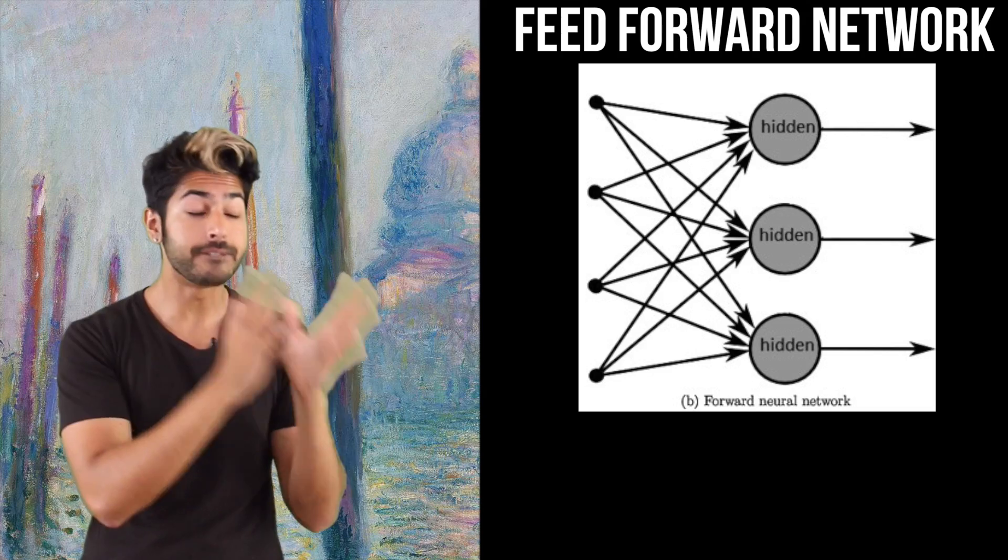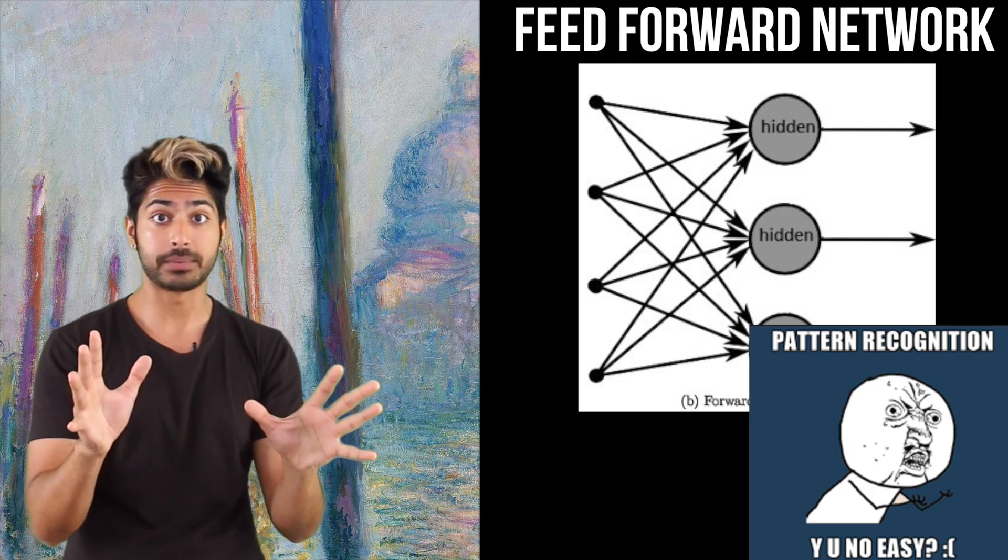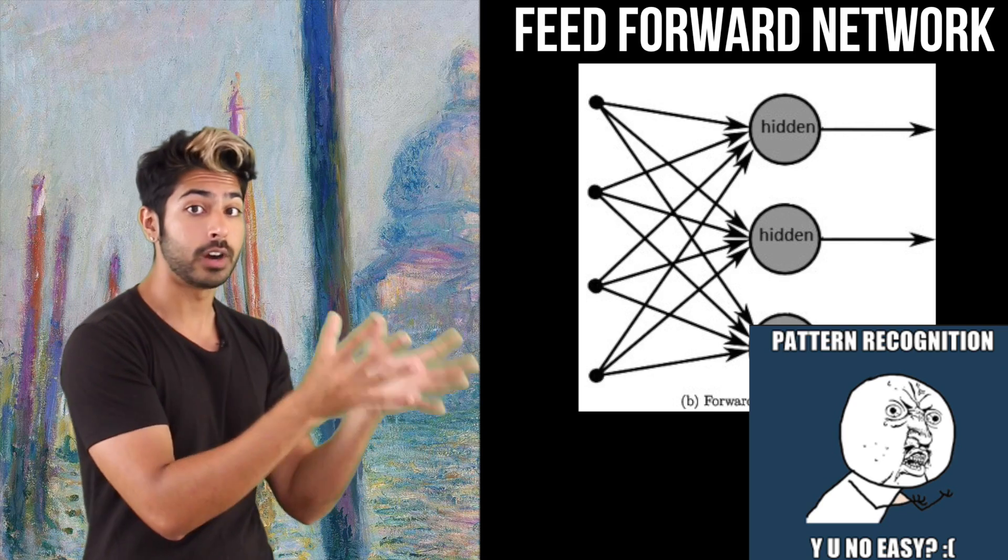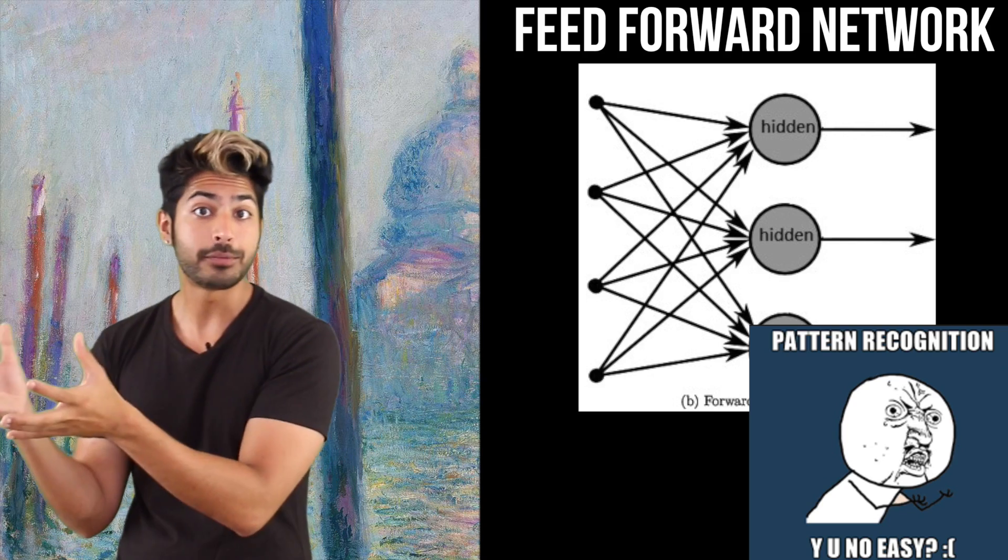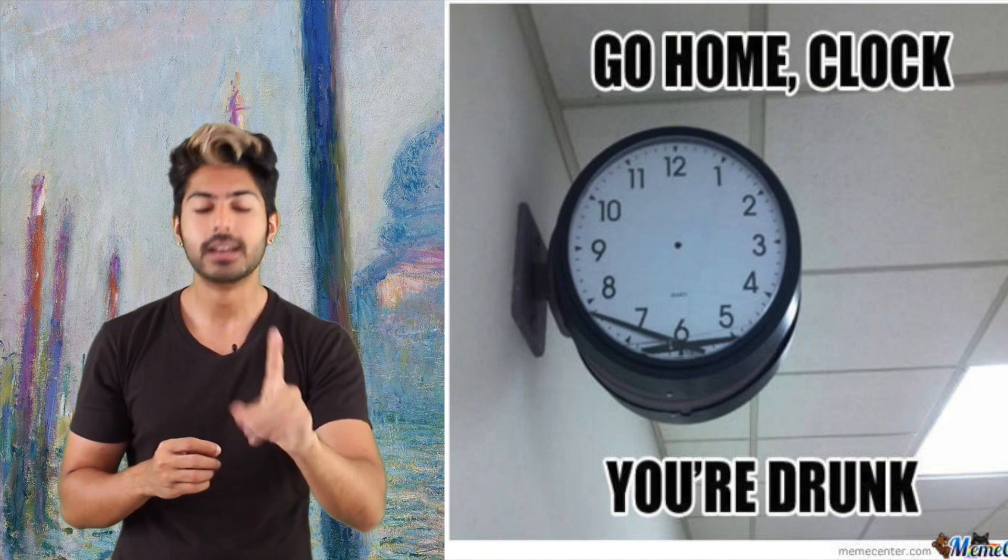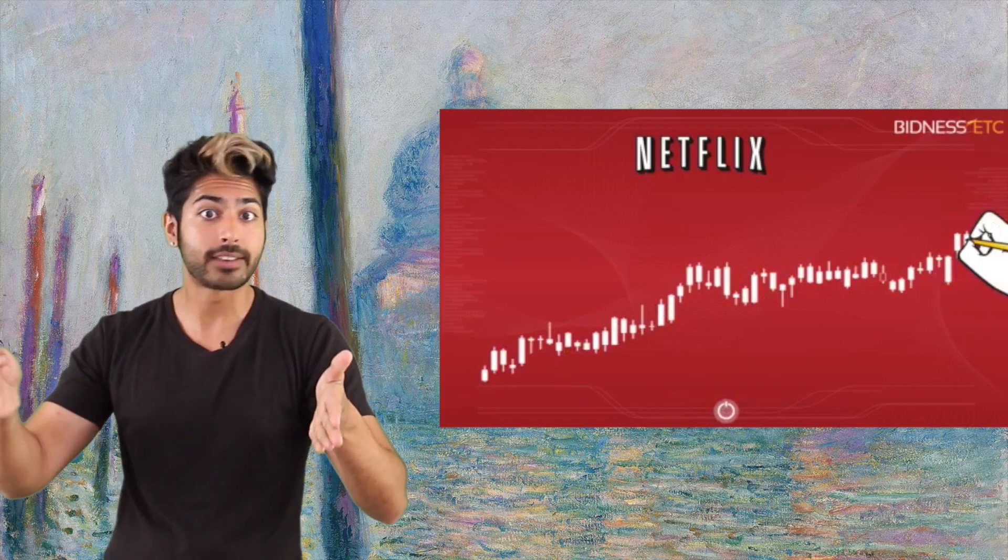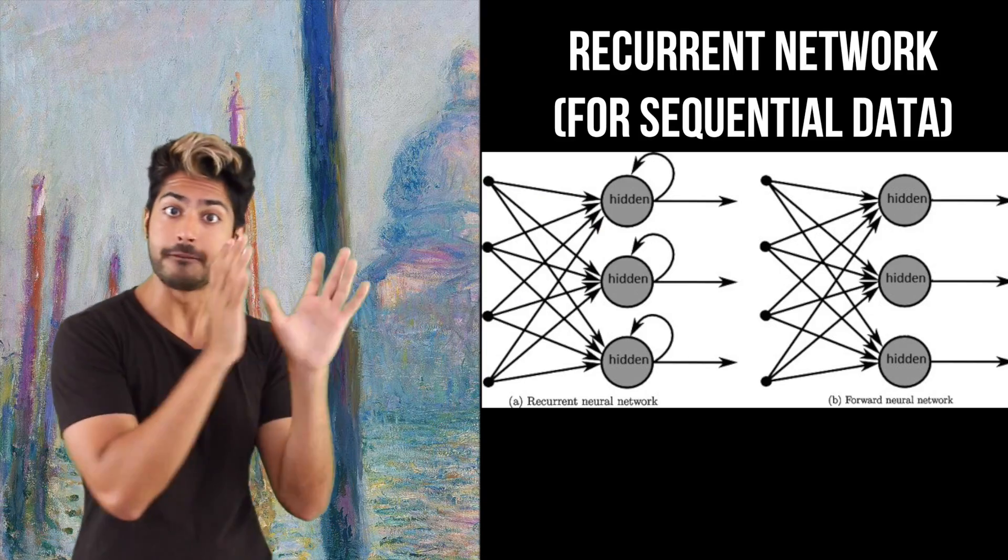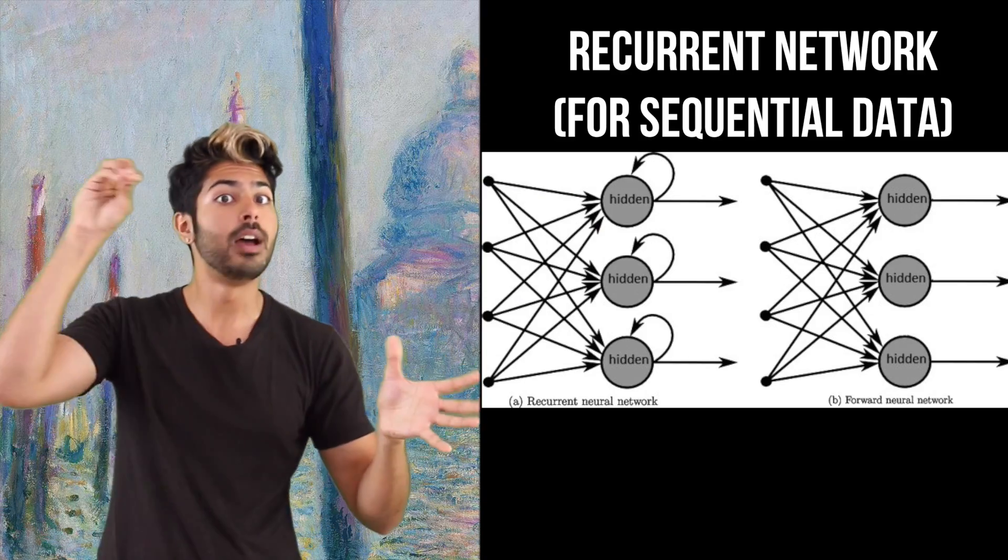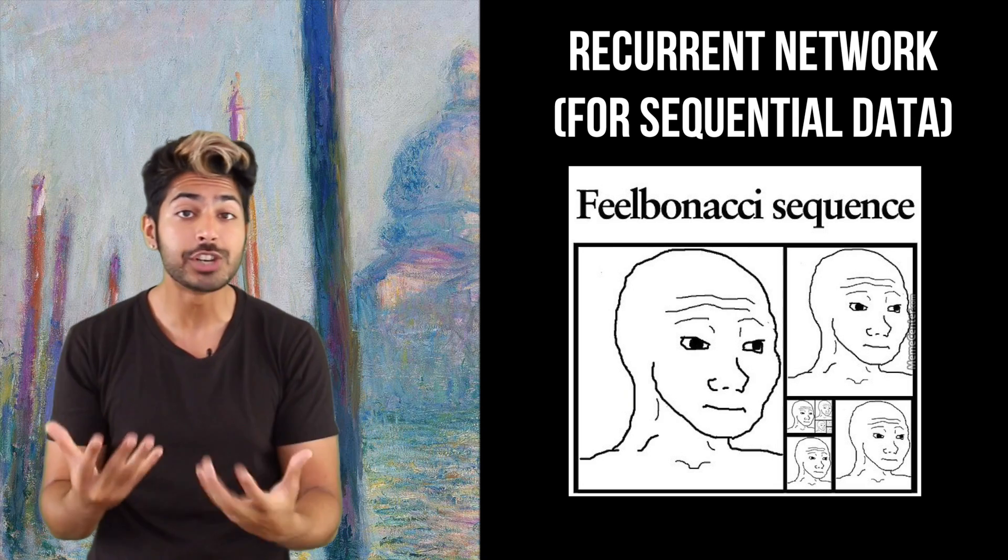What we just built was called a feed forward network. They're great for modeling relationships between any set of input variables and one or more output variables. But what if time mattered in the input sequence? By that I mean, what if the ordering mattered? Like if we're trying to predict the next stock price or musical note in a sequence? Well, we'll need to modify our feed forward network to become a recurrent network, which will allow it to learn a sequential mapping.